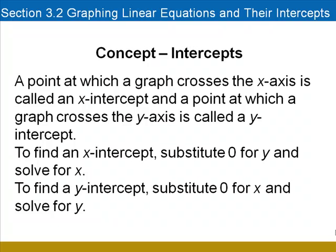A point at which a graph crosses the x-axis is called an x-intercept, and a point at which a graph crosses the y-axis is called a y-intercept. To find the x-intercept, substitute 0 for y and solve for x. To find a y-intercept, we substitute 0 for x and solve for y.